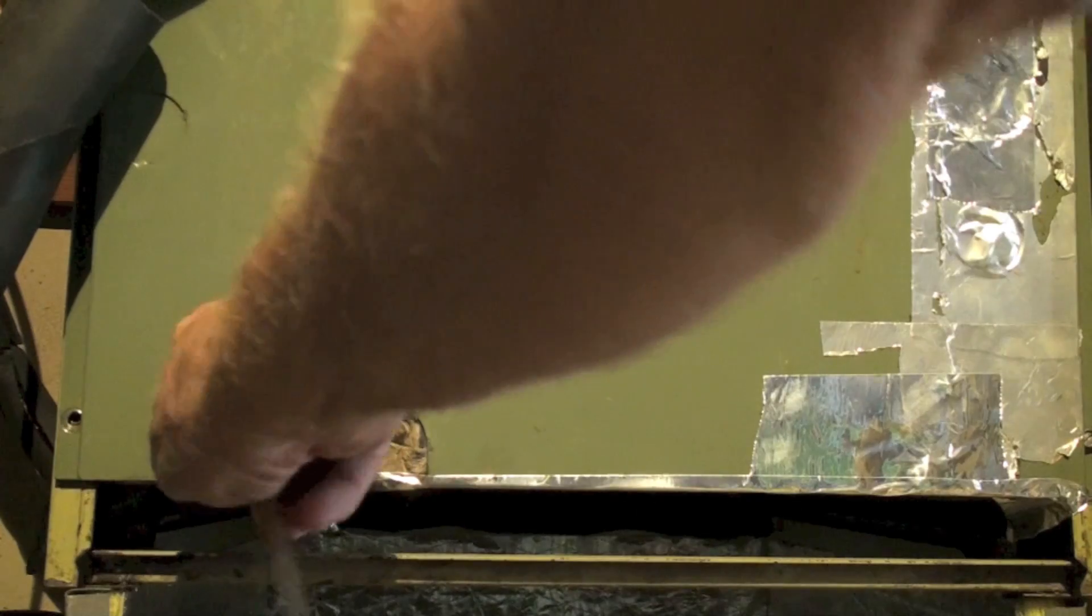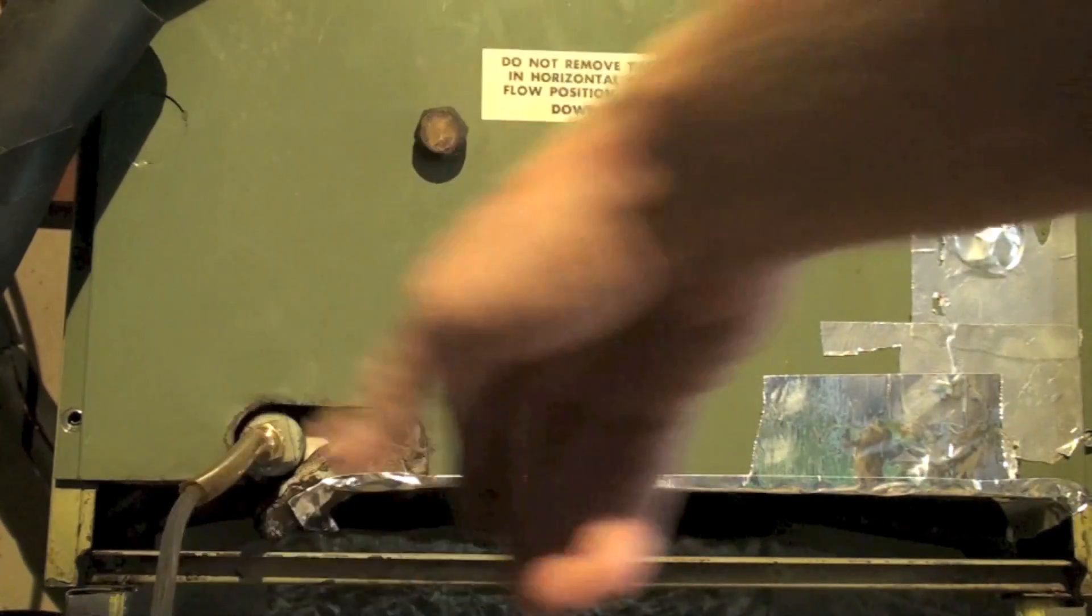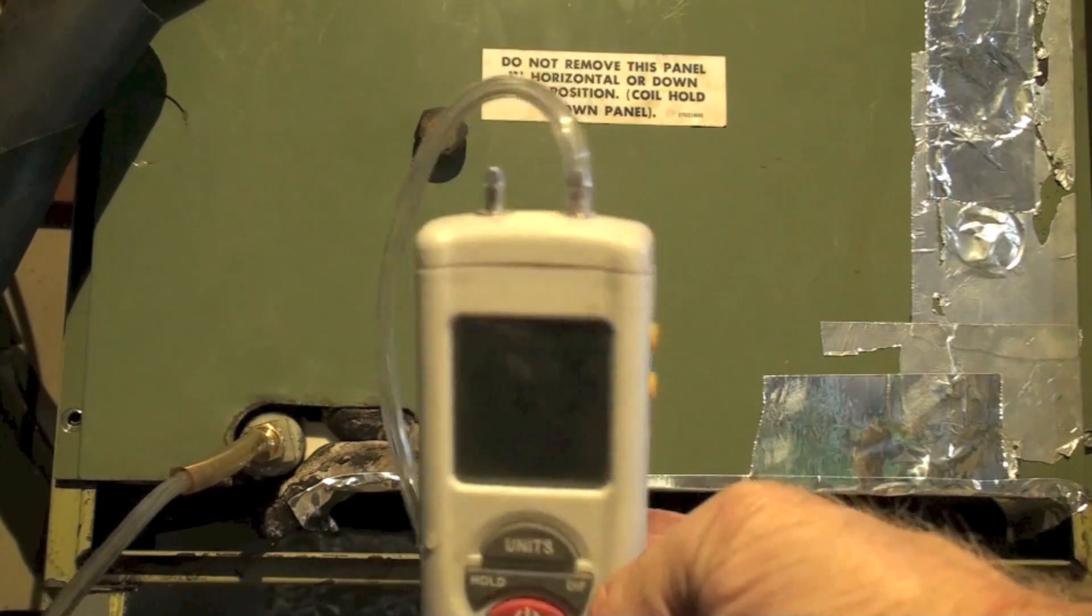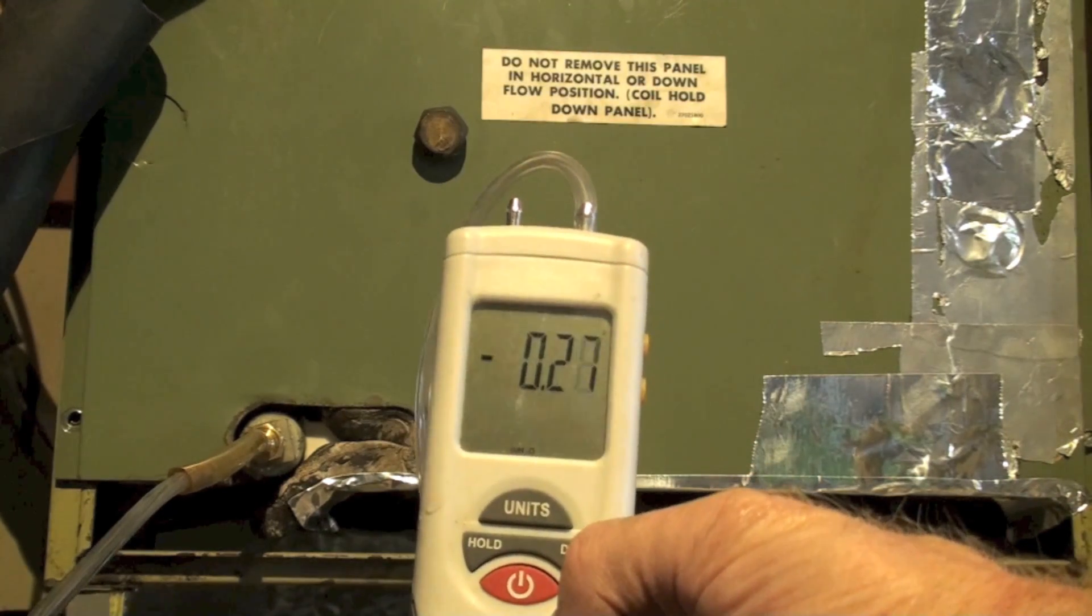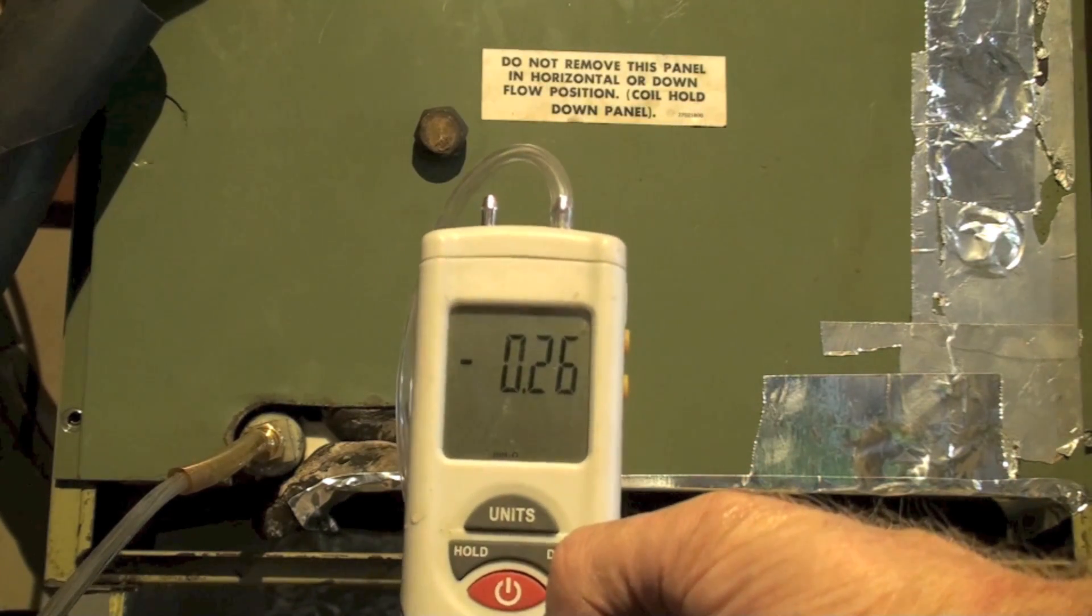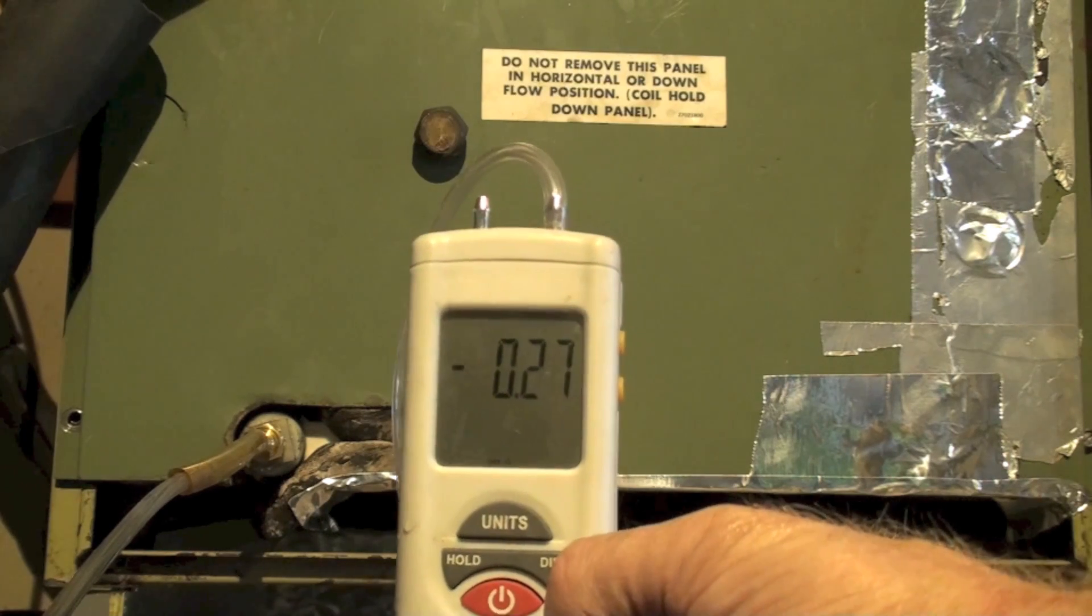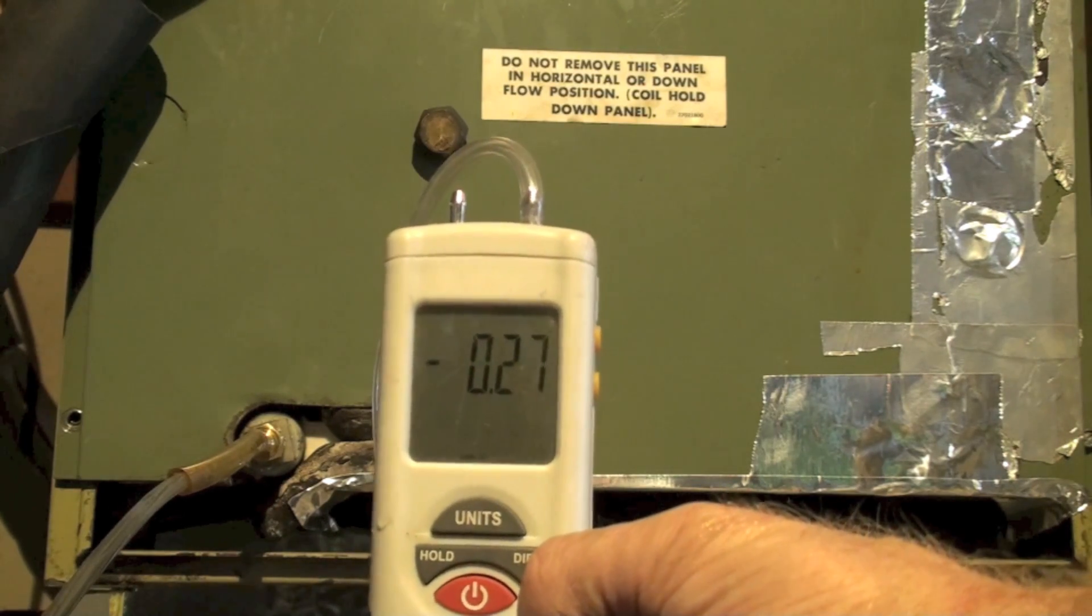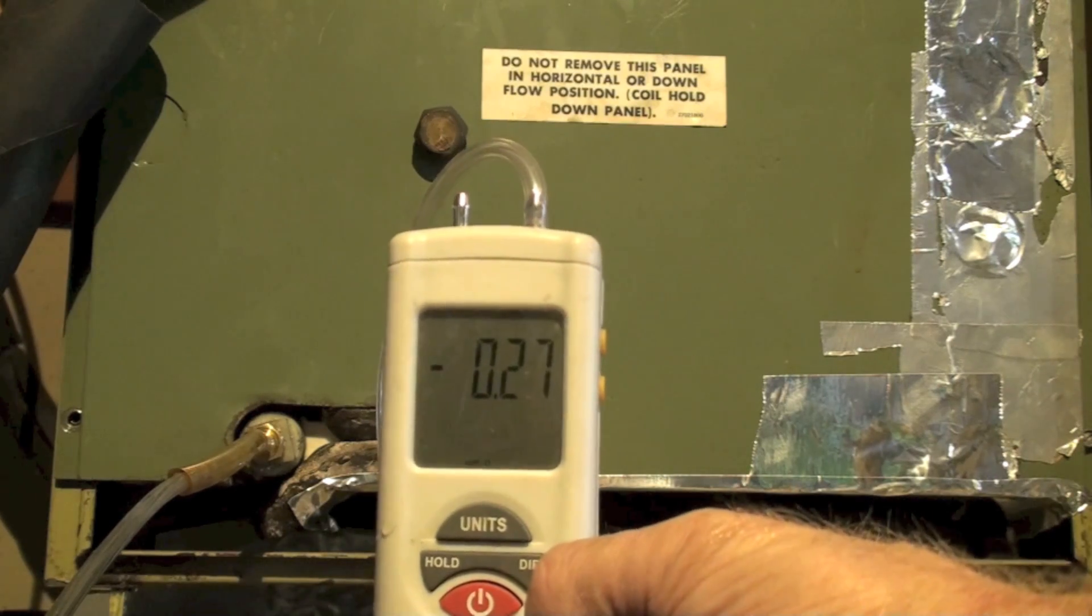I've got a manometer hooked up to this thing. You can see we've got a negative pressure of about 0.208 to 0.207 water column. So that's enough that it's going to suck air back in.